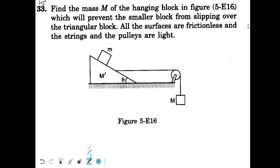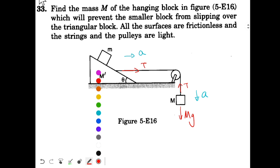So in this situation, this block will go down with acceleration a, and this system will go forward with acceleration a. Let's draw some basic forces first: mg downwards — this is capital M — tension T upwards, and here tension T on the right. Now what we are doing: we will take them together as one system.